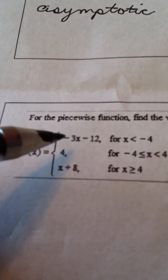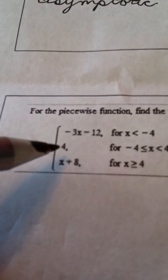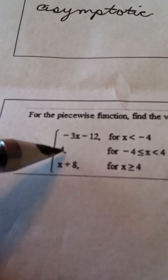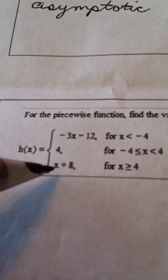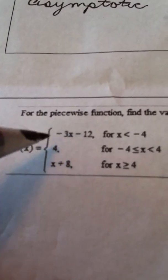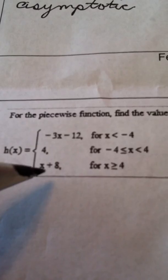One way to evaluate it is to take the opposite of 3x minus 12. Another way to evaluate it is to just make the answer a 4. And the other way to evaluate it is to just take whatever you're putting in and add 8. And how do you know which of these to use? Because there's three different choices you have.